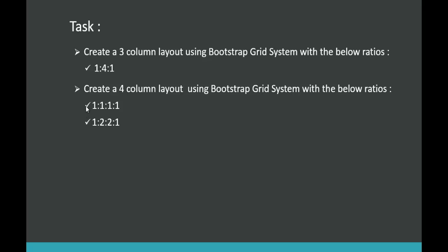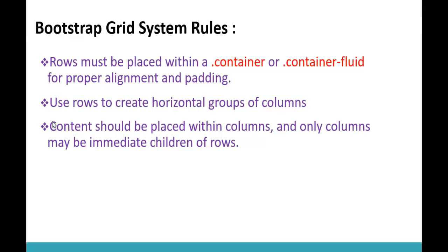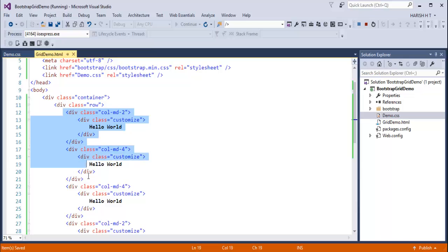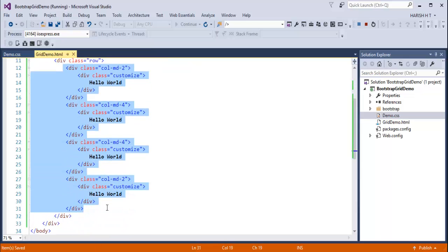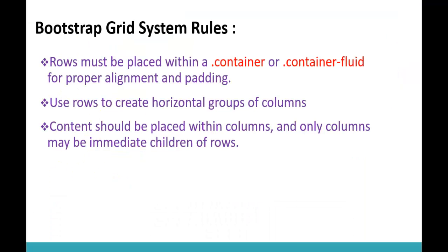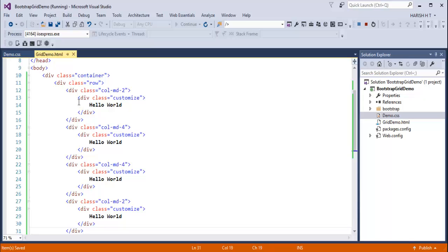Let us recall the remaining Bootstrap Grid System rules. Use rows to create horizontal groups of columns — we have done that, placing our 3-column layout within a row. Content should be placed within columns, and only columns should be the immediate children of rows. You can observe in our code: the content is placed within the columns, and the columns are the immediate children of the row — these rules are satisfied.